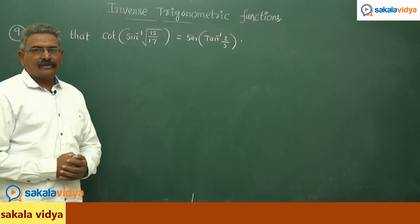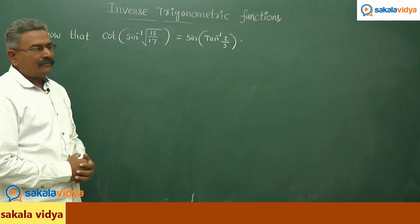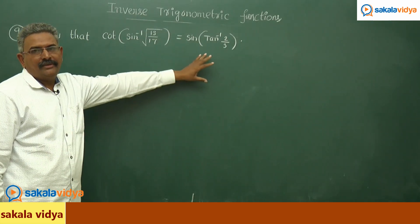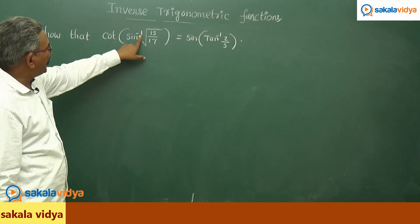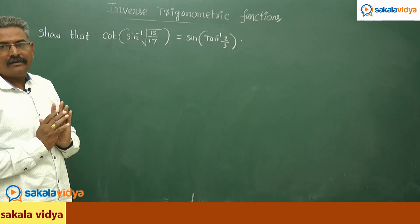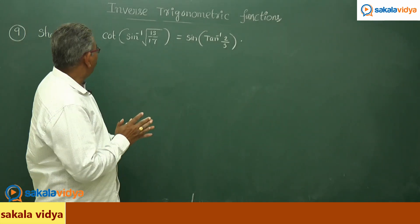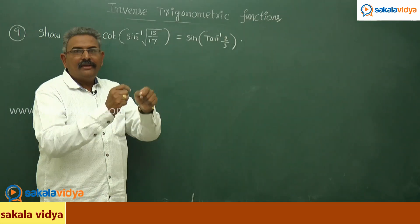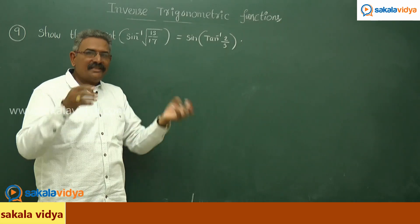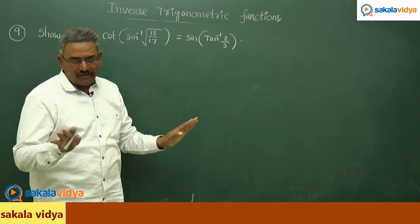Let us move to the next problem. Here we need to show that cot(sin⁻¹(√13/17)) equals sin(tan⁻¹(2/3)). This is the left hand side and this is the right hand side. If we let sin⁻¹(√13/17) = α, the left hand side becomes cot α. And if tan⁻¹(2/3) = β, the right hand side becomes sin β. If cot α and sin β are both the same, then these two values are equal. So we need to prove that cot α equals sin β.